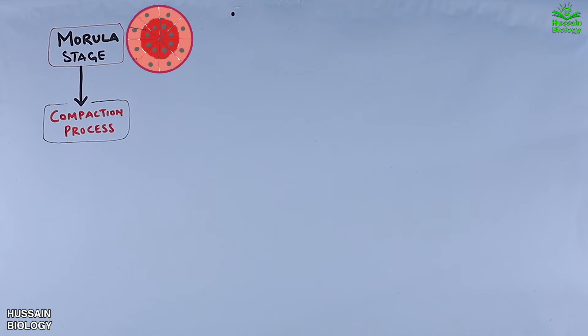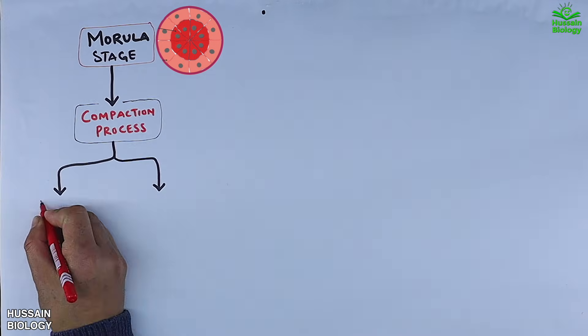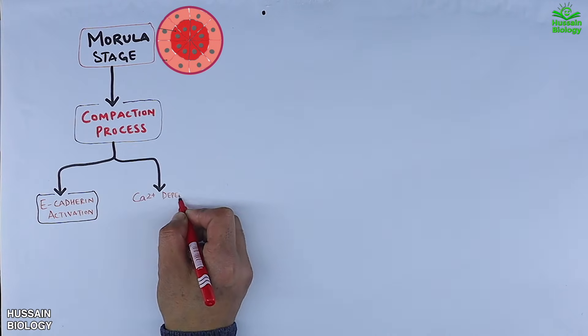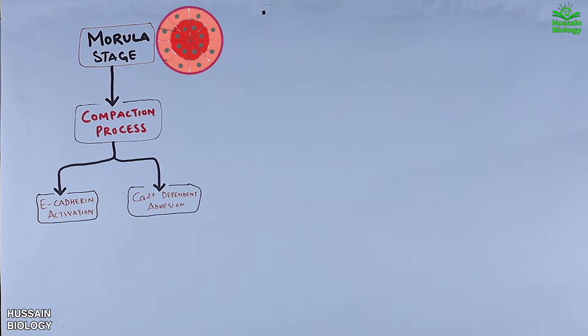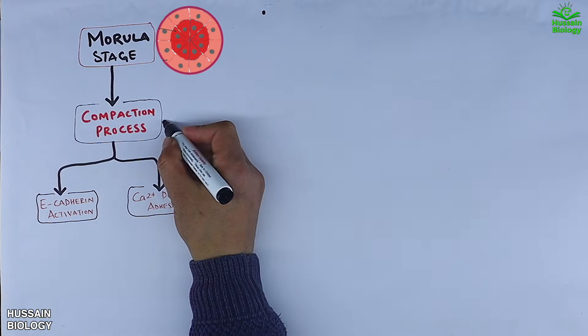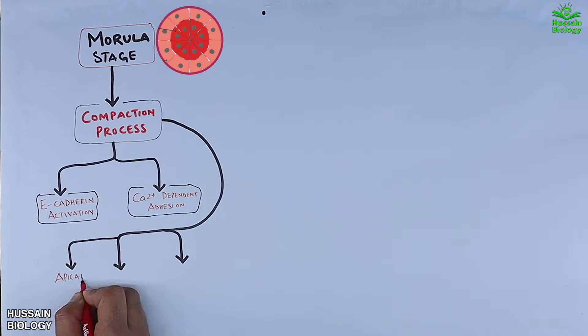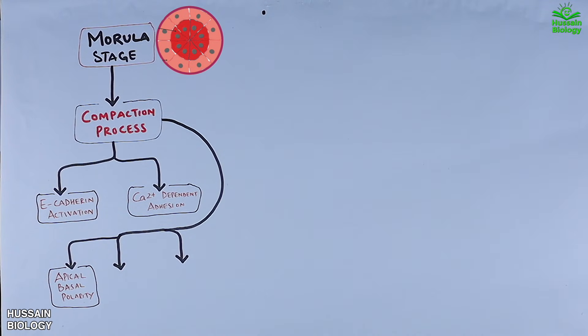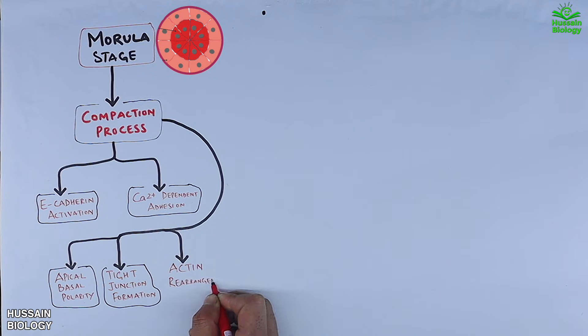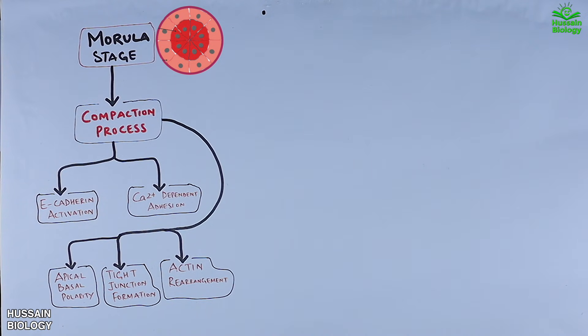Compaction is primarily driven by two key mechanisms: E-cadherin activation and calcium dependent adhesion. The outcomes of the compaction process are threefold: apical basal polarity, tight junction formation, and actin rearrangement.